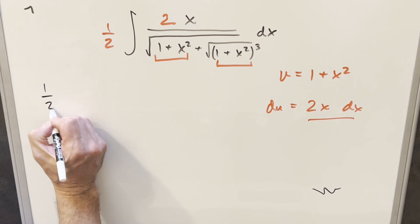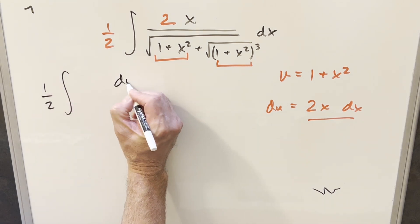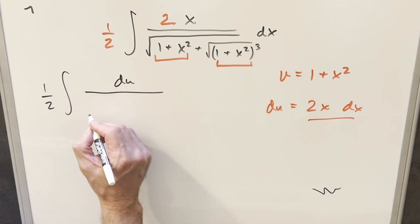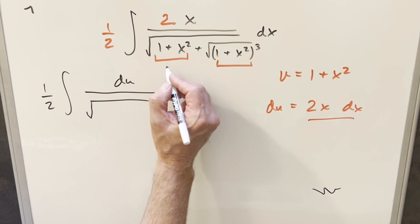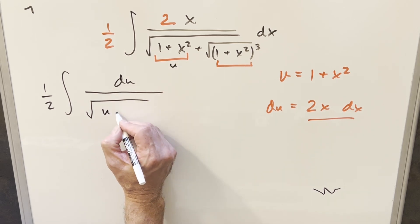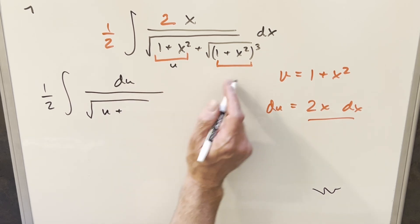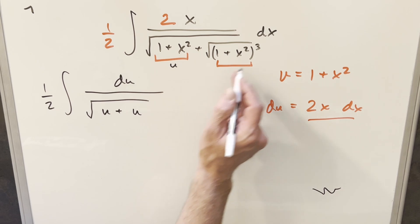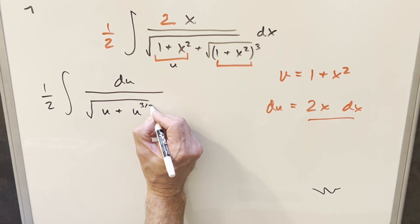Then we'll substitute this. I have the half in front. The numerator is going to be just du. Then all this is going to become, this part's u, so this is going to become u plus, I can write this as u to the 3 halves. We have a cubed inside the square root, so we'll have u to the 3 halves here.